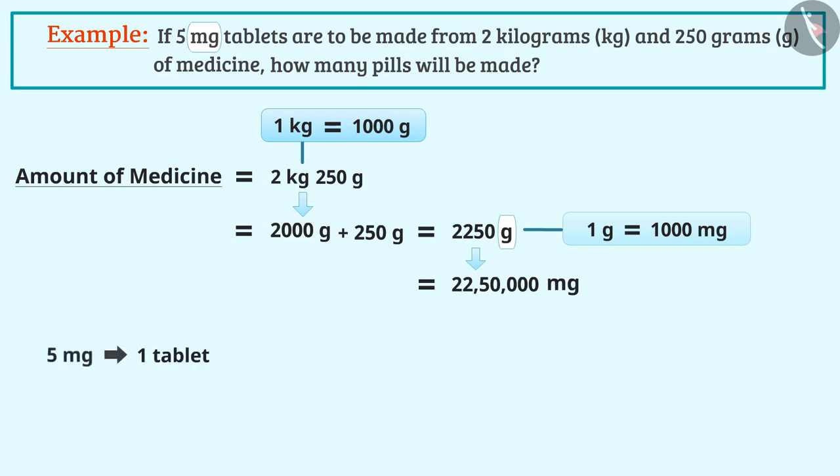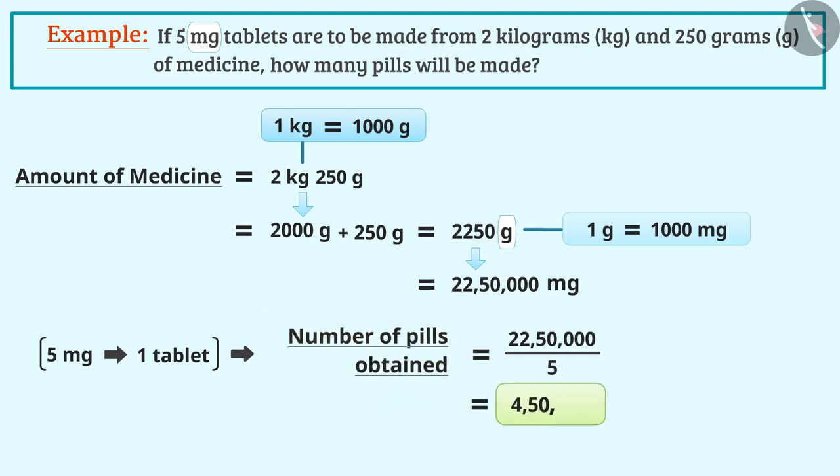One such tablet of 5 mg is to be made from this quantity. So, the number of tablets can be obtained by dividing them. With this, the number of pills obtained is 4 lakh 50,000.